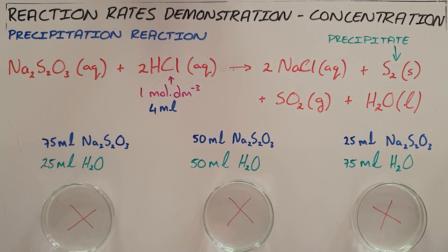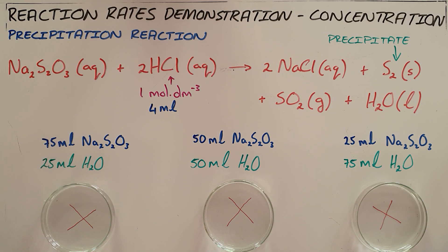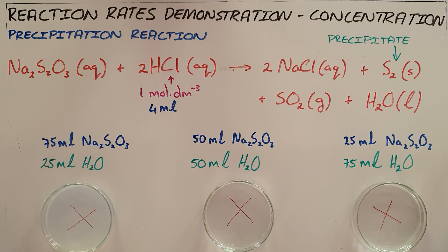Now what we would expect to happen here is that as a result of collision theory — which says that in order for a reaction to occur successfully there must be more collisions, and more collisions would result in more successful collisions — we would expect that the higher concentration of sodium thiosulfate will result in more particles present.